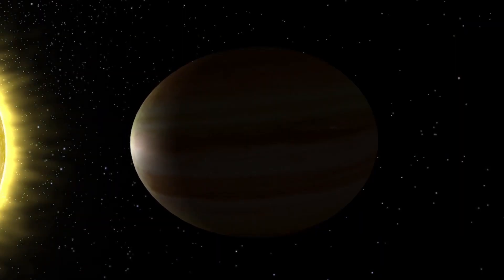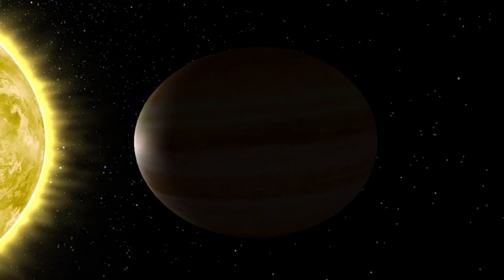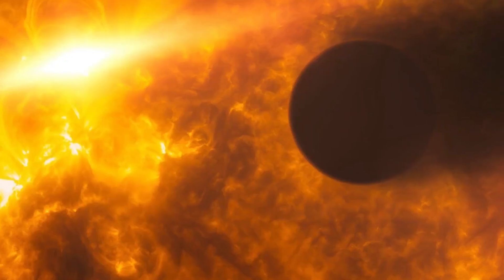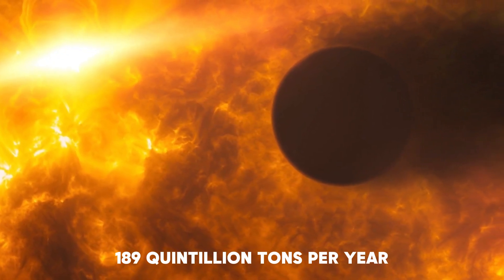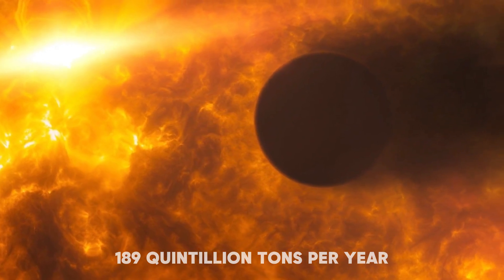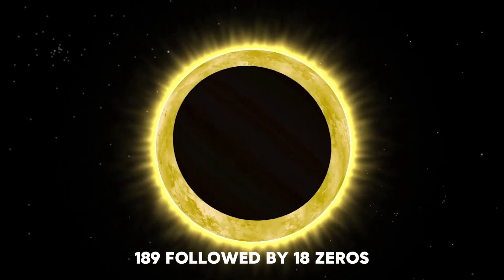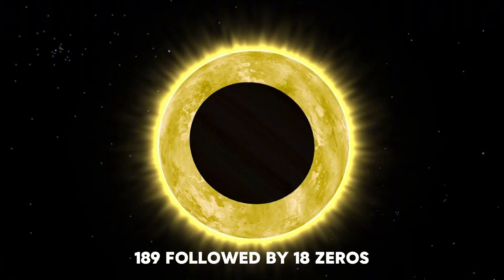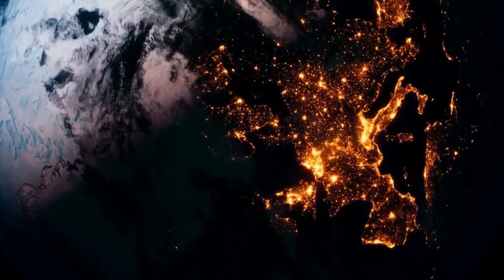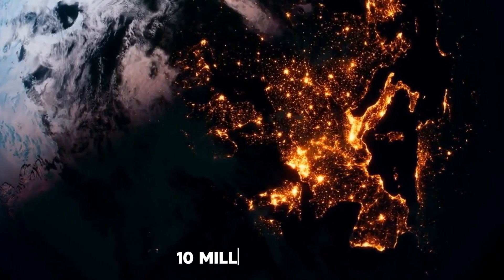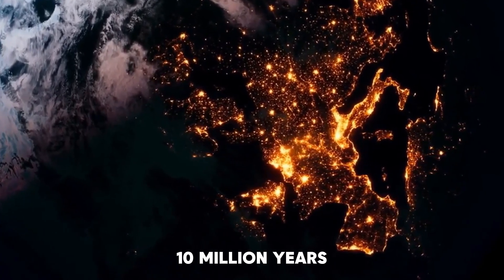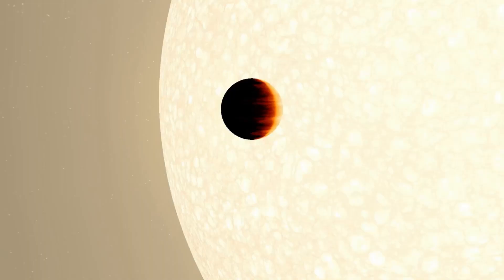It's like watching a cosmic version of a black hole's accretion disk, but with a planet instead of a star being devoured. Scientists estimate that WASP-12b is losing mass at a rate of 189 quintillion tons per year. That's 189 followed by 18 zeros. At this rate, the planet only has about 10 million years left before it's completely consumed.